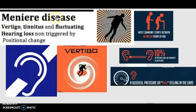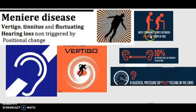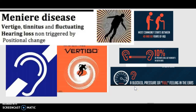Moving on, we have Meniere's disease. Meniere's disease causes vertigo, tinnitus, and fluctuating hearing loss not triggered by positional change — so whether you are upright or head bent forward, this will not cause a change. Statistically it generally starts between the ages of 40 to 60, and in 10% of patients it will affect both ears. The patient will generally feel like the ear is completely blocked or there is a lot of pressure filling up the ear.